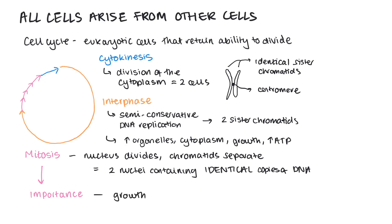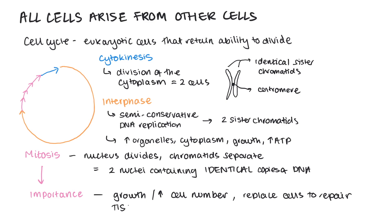Mitosis is important because it enables a parent cell to divide to form two genetically identical daughter cells, which contain exact copies of the DNA of the parent cell. This is important to enable multicellular organisms to grow by increasing their cell number, and it's also important to replace cells to repair tissues. It's also part of asexual reproduction because it creates identical cells.